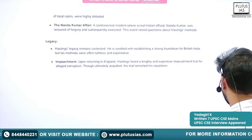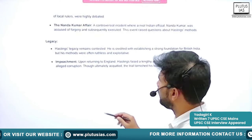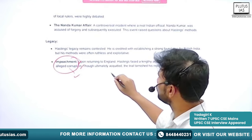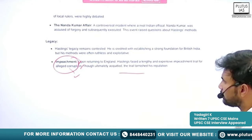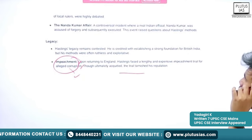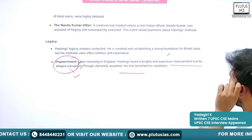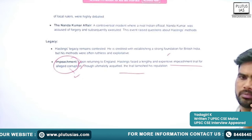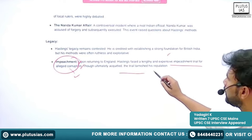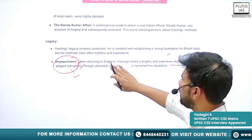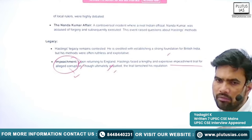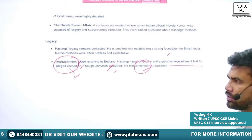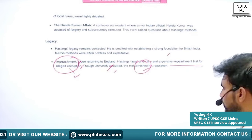Warren Hastings contributed greatly to the administrative foundation of British India. However, he was alleged with corruption in India. Once he went back to England, he had to face a lengthy and expensive impeachment trial for alleged corruption in India. In the end he was acquitted of the charges, but his image was greatly tarnished due to that trial.